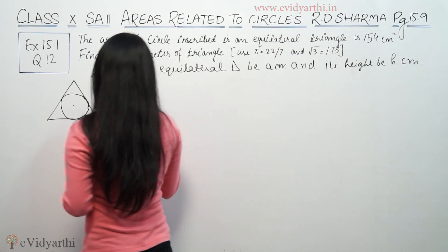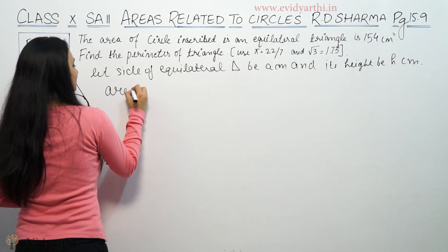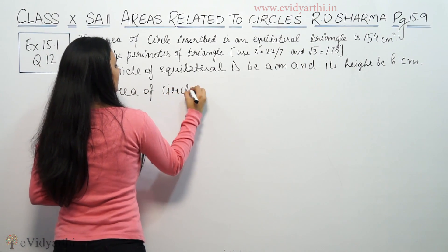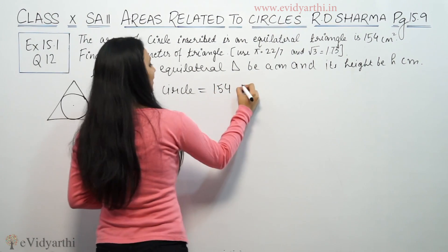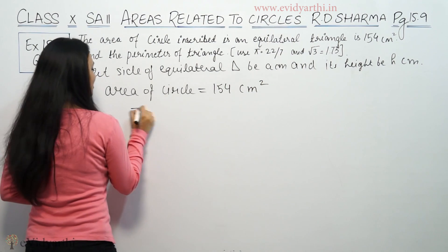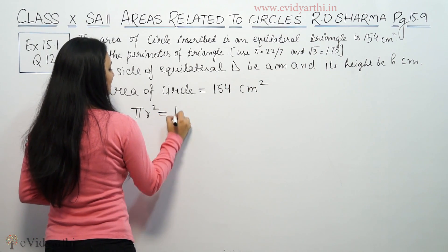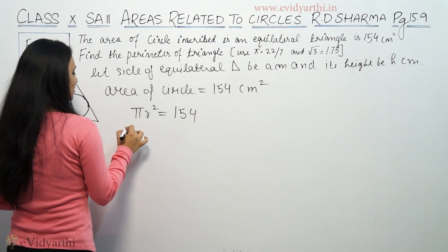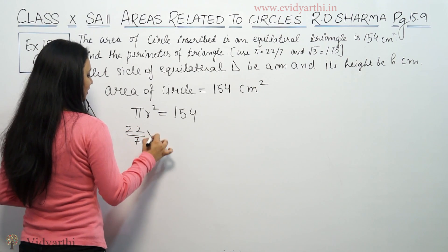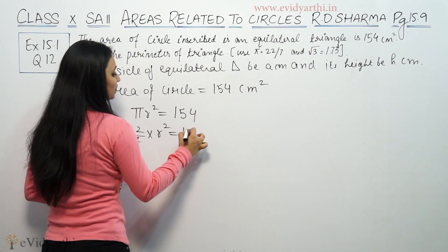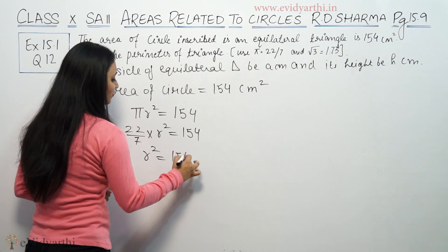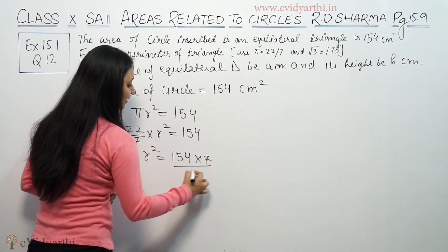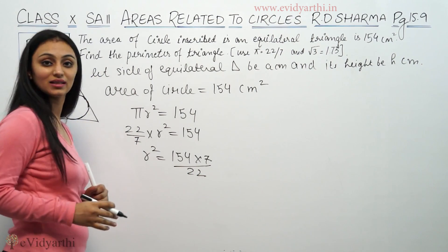Now, the area of the circle is given as 154 cm². So, area is pi r² equals 154. Pi is 22/7, so 22/7 times r² equals 154. Therefore, r² equals 154 times 7 divided by 22.